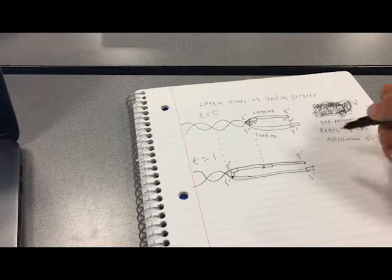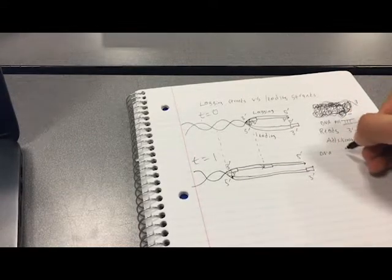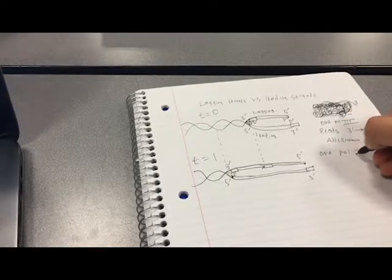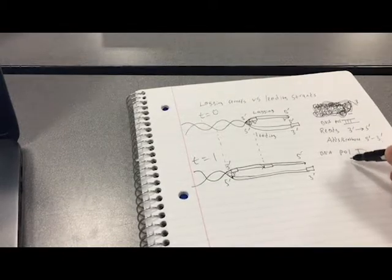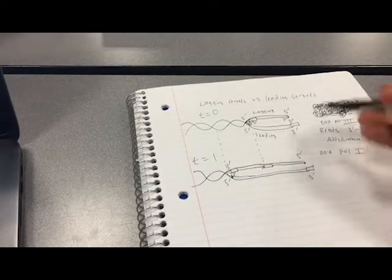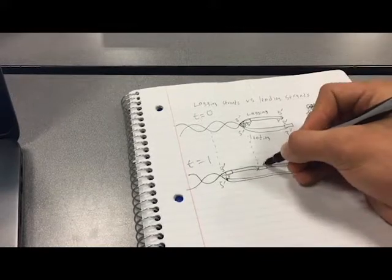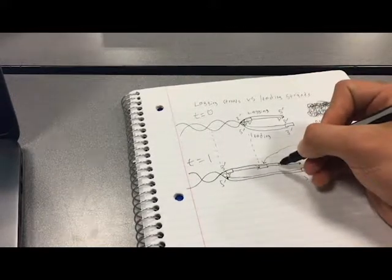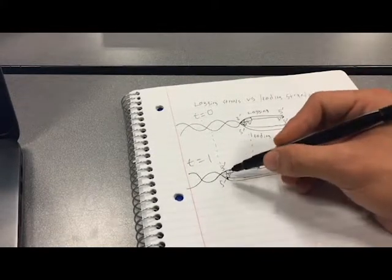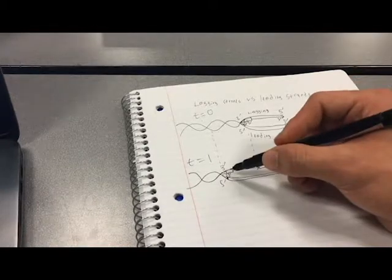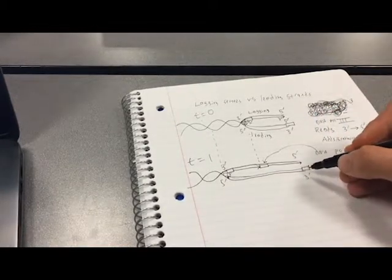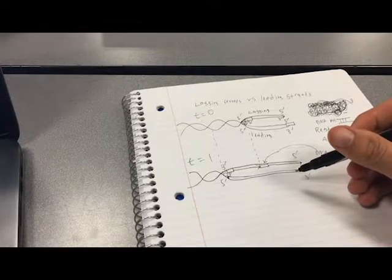So basically, what comes in now is DNA polymerase 1. And what DNA polymerase 1 basically does is go in and it replaces the RNA with DNA segments. So it'll replace all these primers, even right here for the leading strand, and make it DNA.